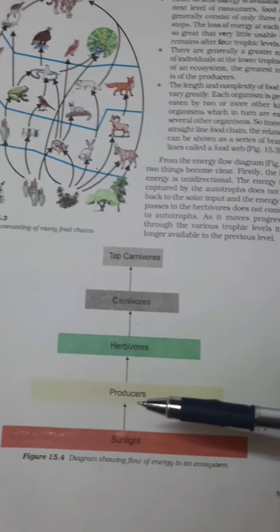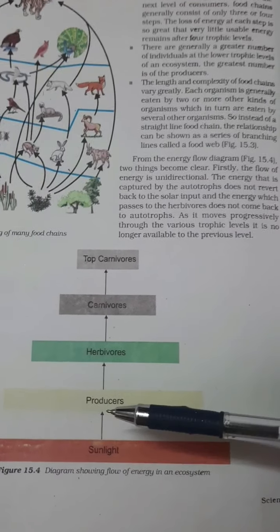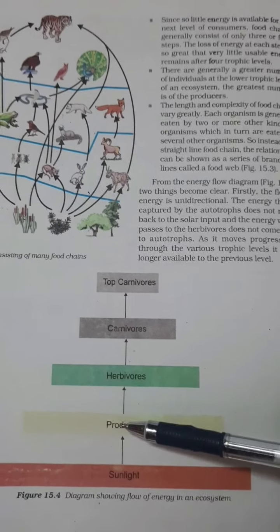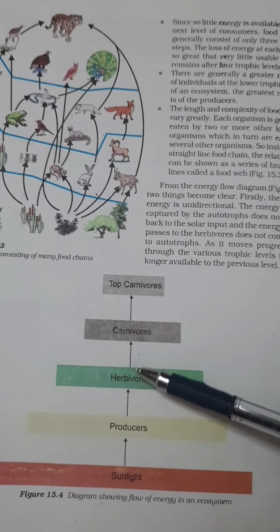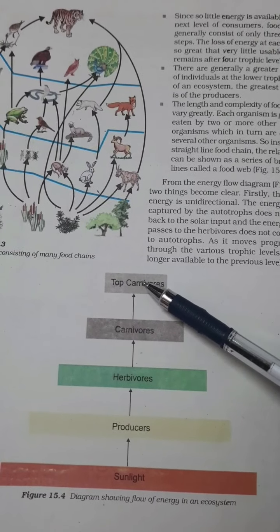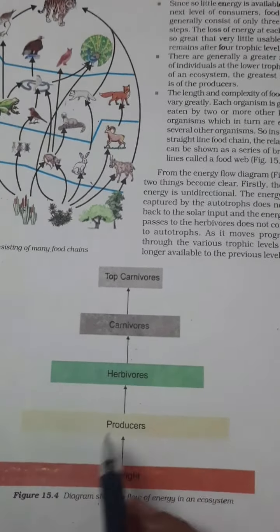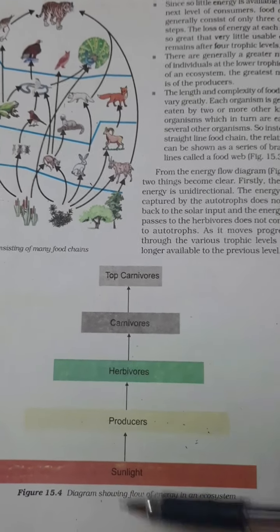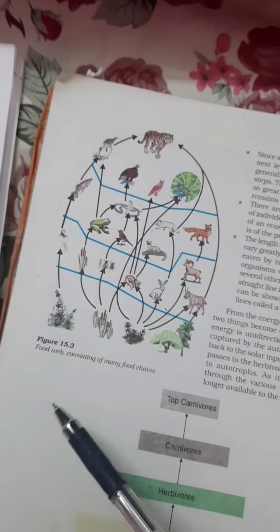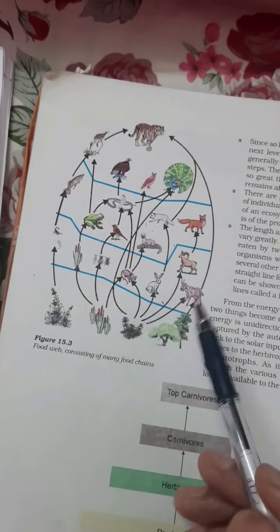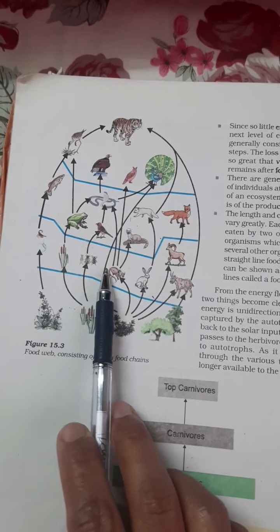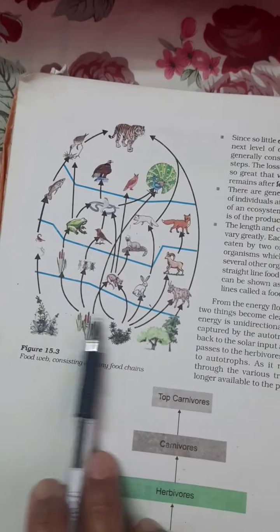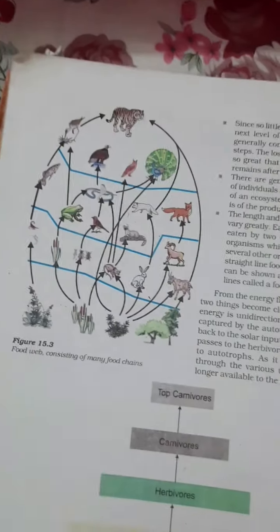In figure 15.4 there is a flow chart showing the flow of energy in an ecosystem. Sunlight is taken by producers, producers are fed upon by herbivores, herbivores are eaten by carnivores, and carnivores are eaten by top carnivores. Producers are large in number — we can find the greatest number of producers on Earth. These food chains vary in length. There is no single straight food chain; instead, there is a web or network of food chains.